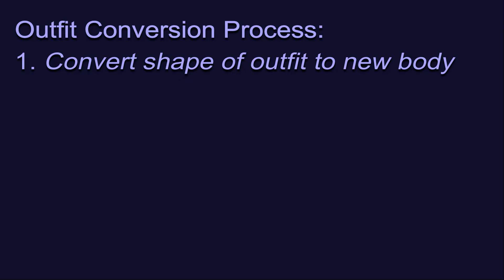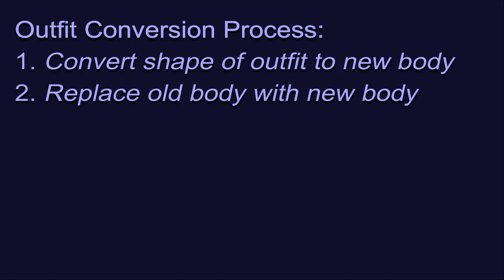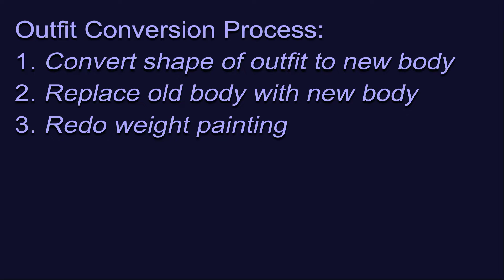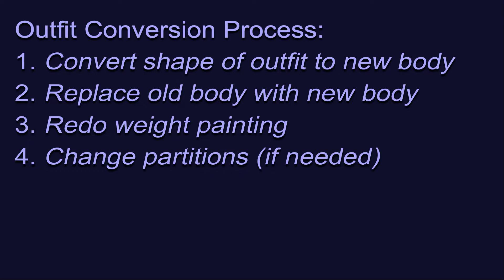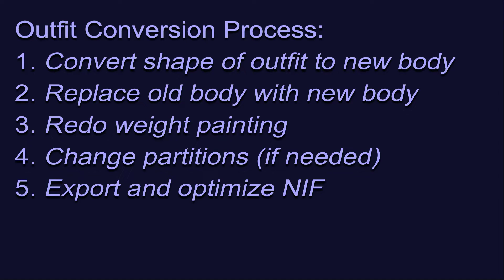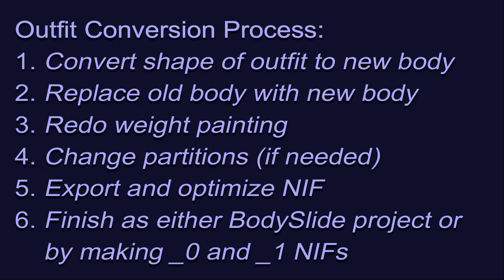Outfit conversions can be challenging and may put all of your Outfit Studio skills to the test. The general outfit conversion process is: first, convert the shape of the outfit to match the new body; then replace the original body with the new body; then redo weight painting, either in part or in full, so that the outfit matches the new body; check and if needed change the partitions; export and optimize the NIF; and then finish in one of two ways — for BodySlide, conform the outfit to the reference body sliders, edit sliders as needed, and make any required zap sliders; if not for BodySlide, make size 0 and/or size 1 versions of the NIFs.